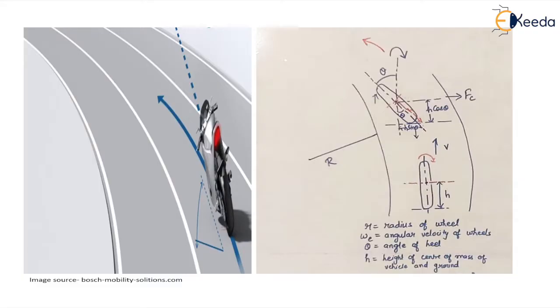In this diagram you can see that there is a two wheeled vehicle, a two wheeler. These are the two wheels; we can see the two wheels.